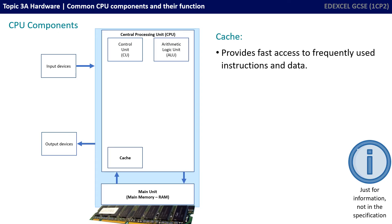Next is the cache. This is a small amount of very fast memory which is typically located either very close to or actually inside the CPU itself. Its purpose is to provide fast access to frequently used instructions and data. Information fetched or written to cache is done much quicker than information fetched or written to main memory.